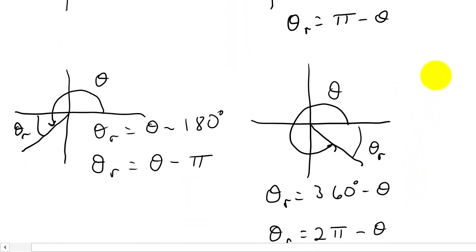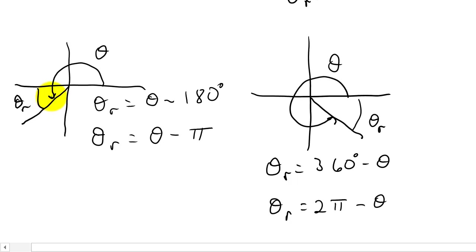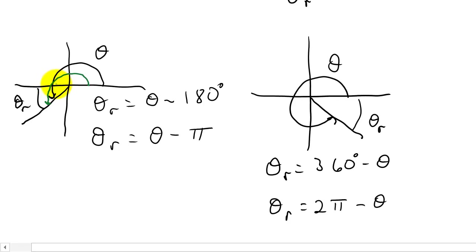Now what about if our angle is in the third quadrant? Remember, the reference angle is always measured off the x-axis, not the y-axis. To find the reference angle, it would be angle theta minus 180 degrees — taking 180 off of theta leaves us with just the reference angle. So it would be theta minus 180 degrees, or if you're in radians, theta minus pi.